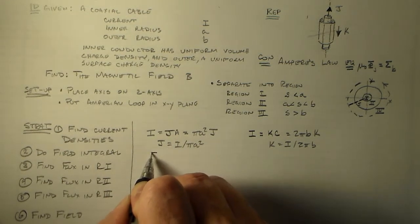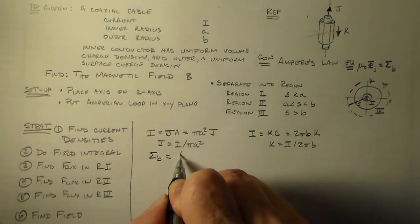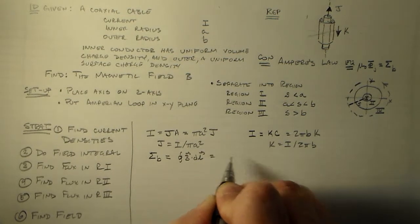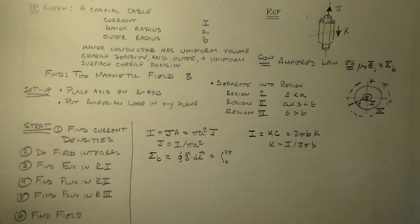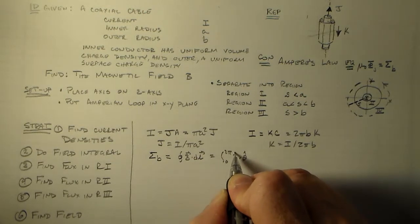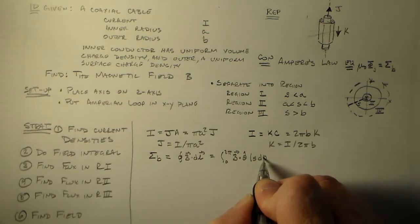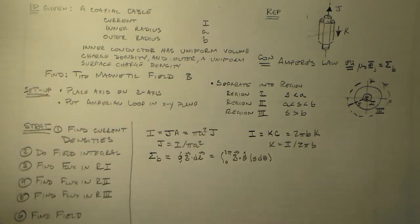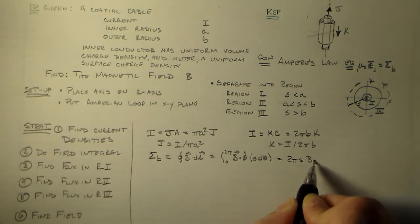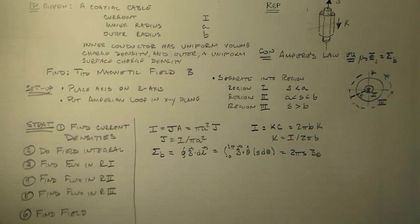Now we do the field integral — we'll find the line integral of B·dl around the circle. That integral goes from 0 to 2π of B dotted with theta-hat, times s, d-theta. That works out to 2π·s·B_θ, and that result is going to be the same in each region.